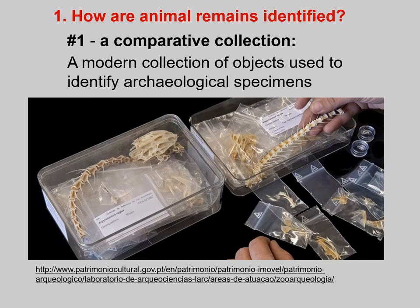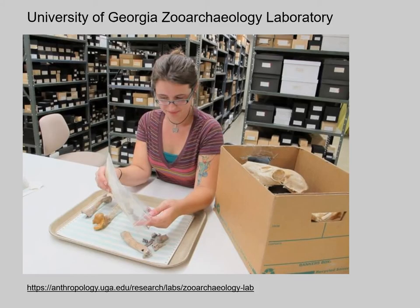How are animal remains identified? The zooarchaeologist relies on a comparative collection. You must have a comparative collection for the part of the world in which you are working — a modern collection of objects used to identify the archaeological specimens. If you are identifying mollusks, you need a collection of mollusks; if you are identifying eggshells, you need a collection of eggshells. These comparative collections can be quite large, as you see in the background here in this picture at the University of Georgia Zooarchaeology Lab. You wouldn't have just one specimen per species — you want a range: an adult, a juvenile, an infant, a male, a female. You need a population of comparative specimens.